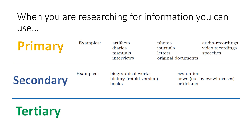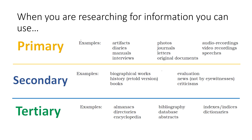Last are tertiary sources. Examples are almanacs, directories, encyclopedia, bibliography, database, abstracts, indices, and dictionaries. They came from either primary or secondary sources of information. If you are looking for information on a specific topic, you can use primary, secondary, and tertiary sources of information.